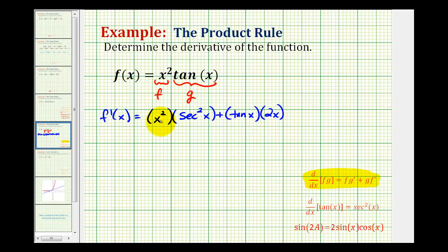So this is the derivative function. Now we have to multiply and try to simplify this. So we have f prime of x is going to be equal to x squared secant squared x plus two x tangent x.